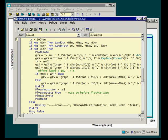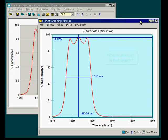Now let's look at this graph again. In my way of thinking, there's something missing here. If I made bandpass filters, I'd want to display the blocking on the same graph.